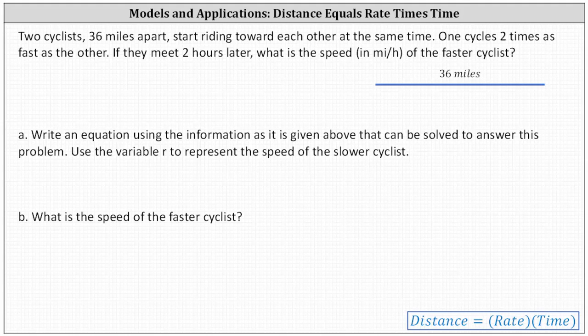Two cyclists, 36 miles apart, start running toward each other at the same time. One cycles two times as fast as the other. If they meet two hours later, what is the speed in miles per hour of the faster cyclist?